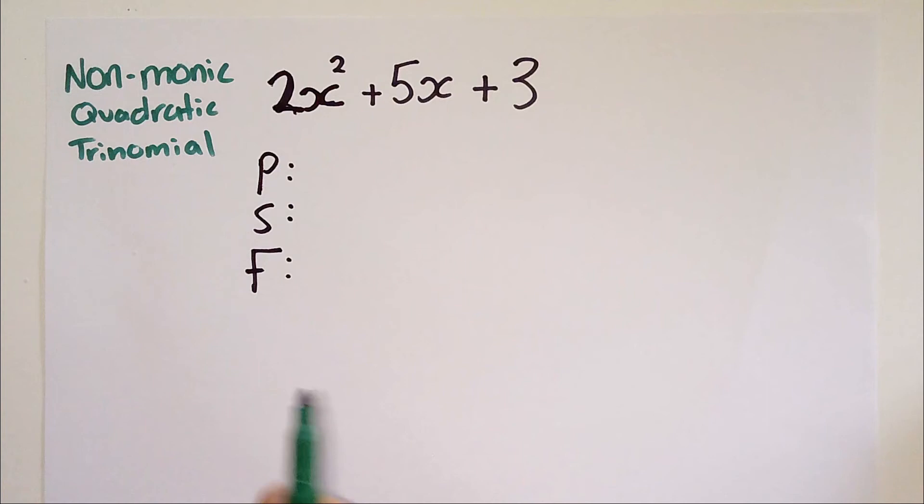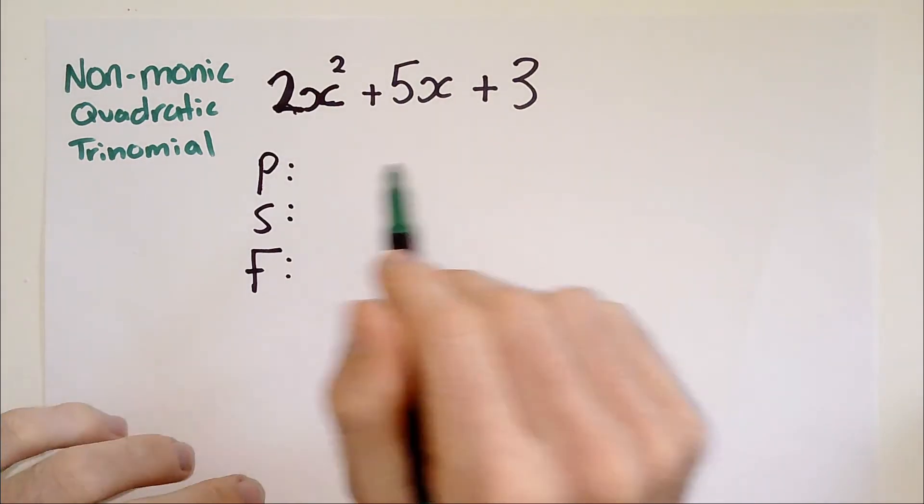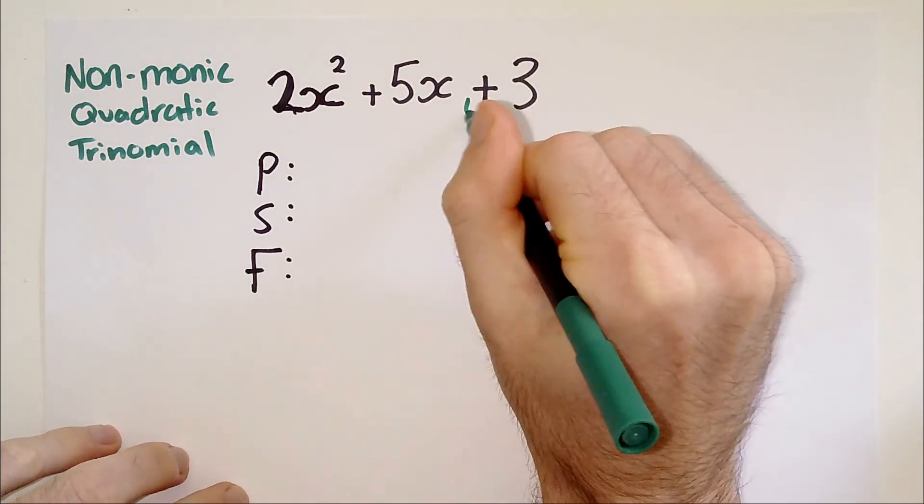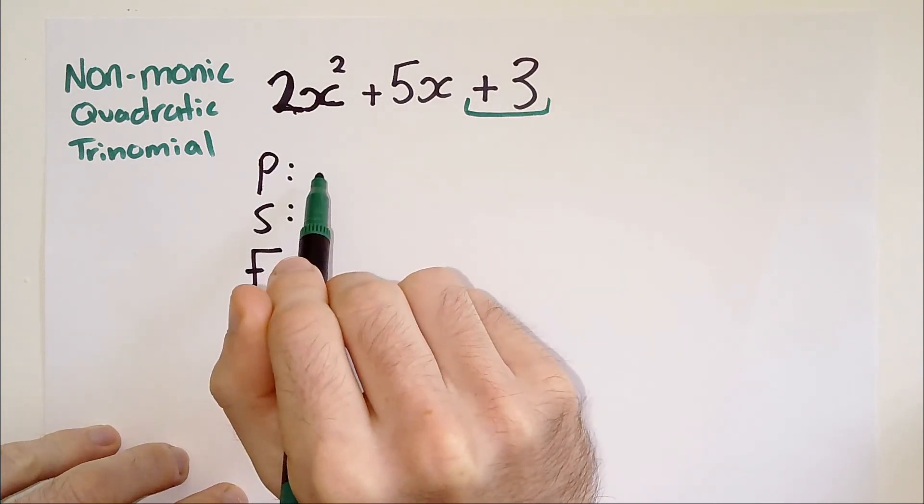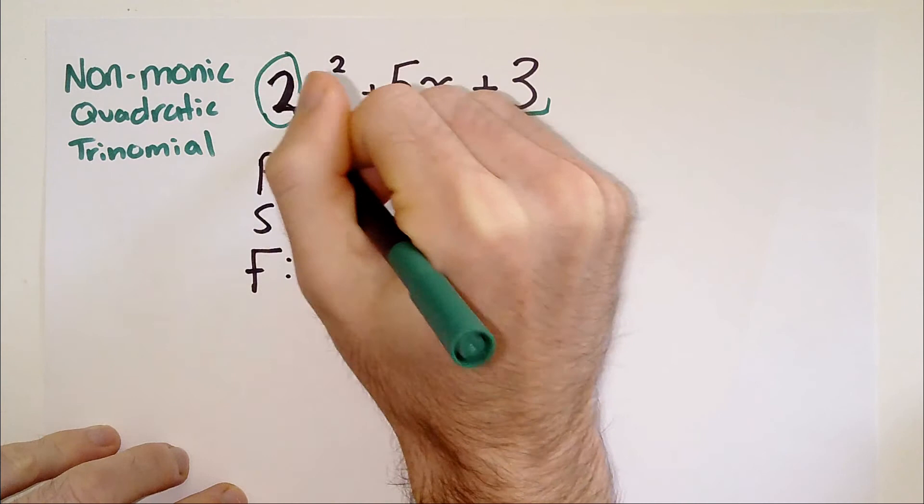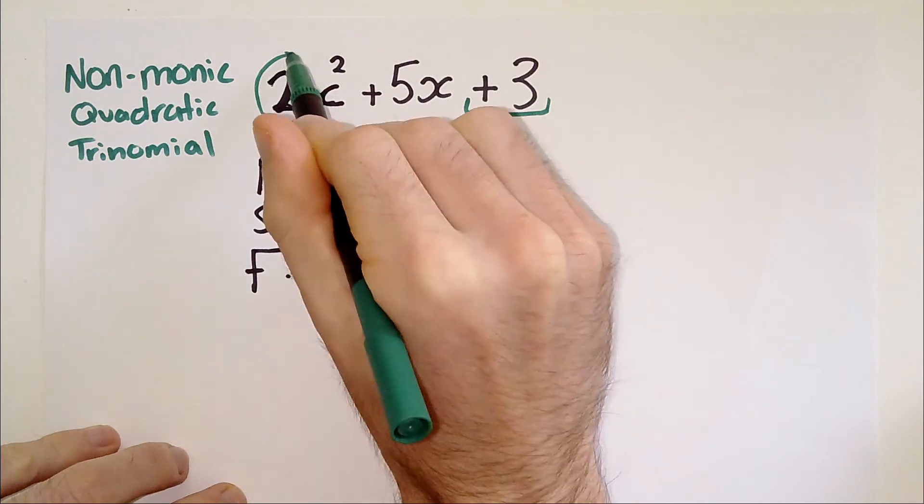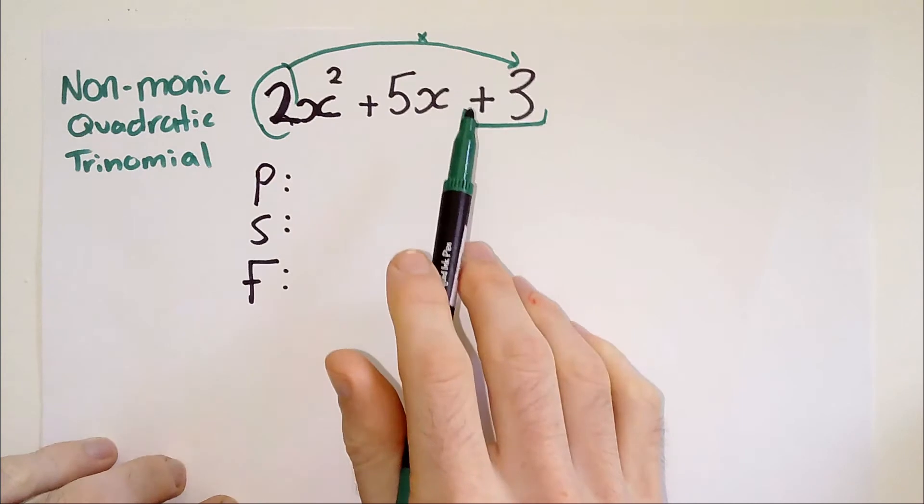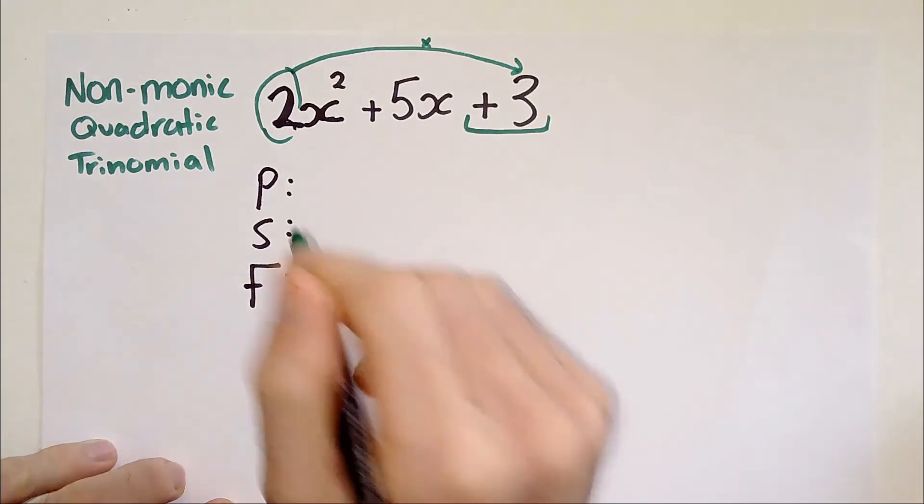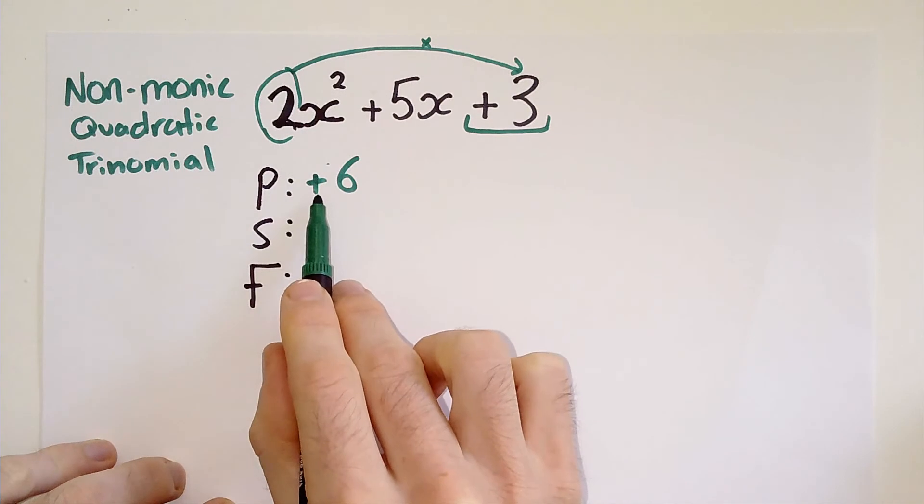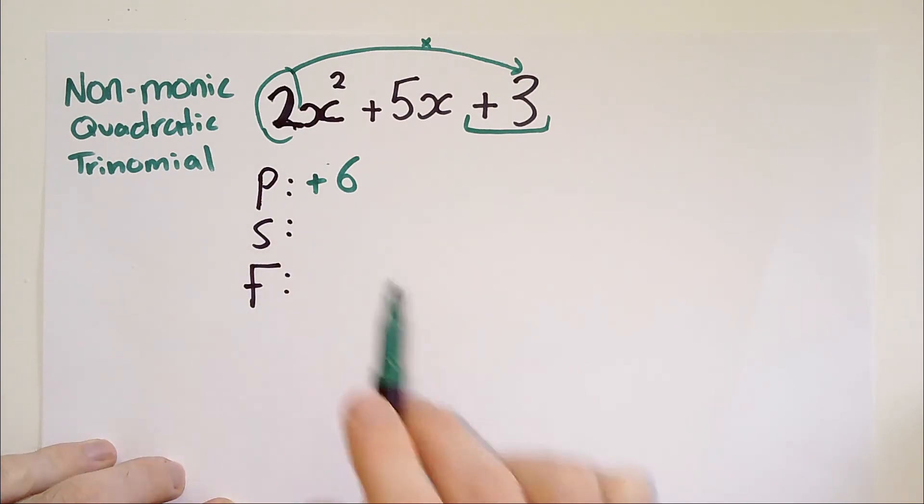P means product. That means we want two numbers that multiply to the following. With monic quadratic trinomials, it would be plus three, but actually because it's a non-monic, you have to get this number at the front here, the two, and multiply it by three. This is the unique step. We have two times three, equaling positive six.